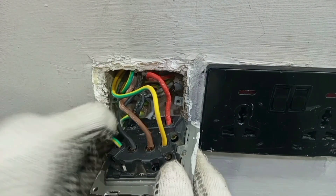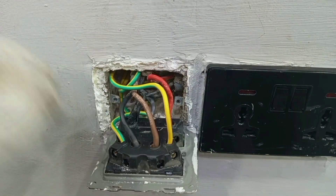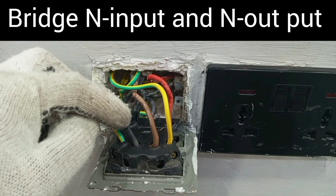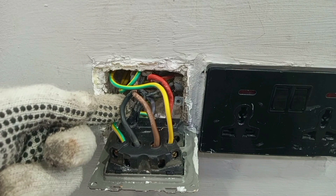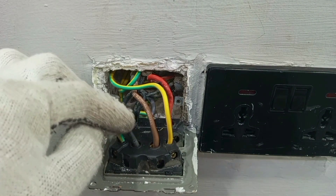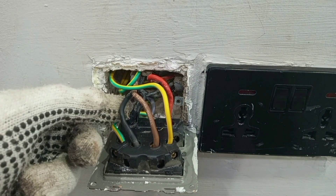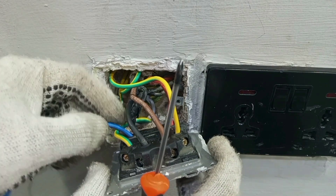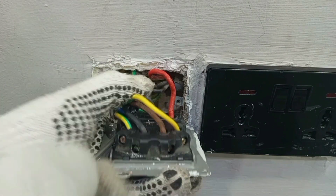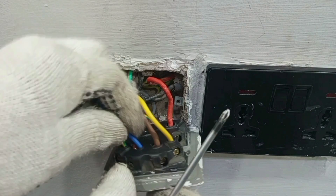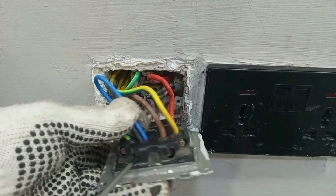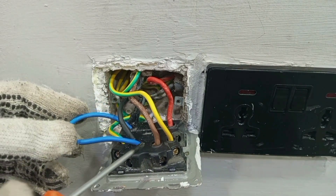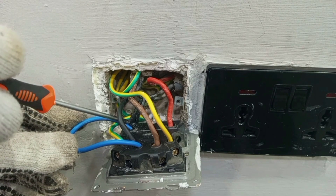Now that we have access to the inside of the AC switch, what we need to do is to bridge the input and output neutral connections. We get a piece of wire to bridge the input and output neutral connections. What I have just done is bridge those input and output neutral connections.